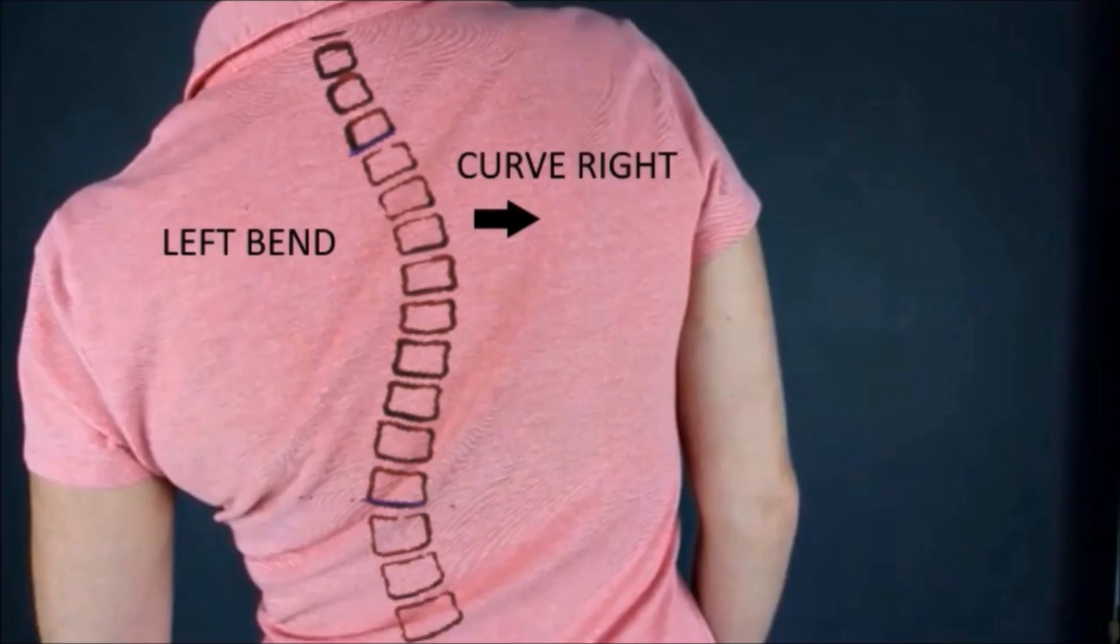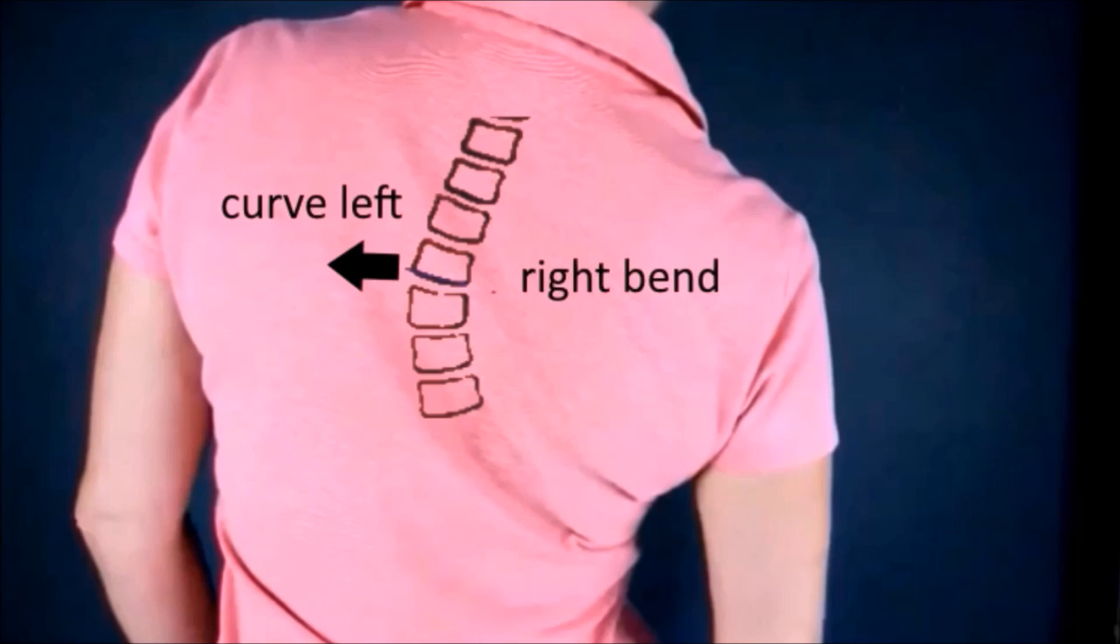If you have a thorax curve to the right, that means your body is bending left, as you see here, and the ribs are much closer together on the left side. And if you have a thorax curve to the left, that means your body is bending to the right and the ribs are much closer together on that side.